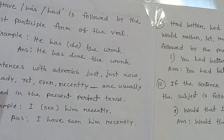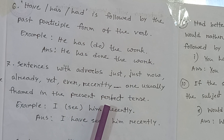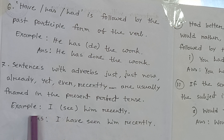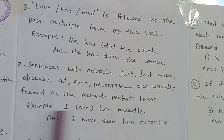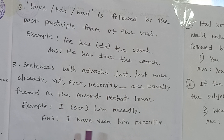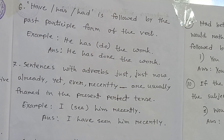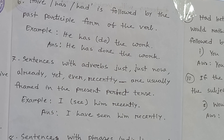Rule number seven: sentences with adverbs just, just now, already, yet, ever, recently are usually framed in the present perfect tense. For example, 'I (see) him recently' — you write 'I have seen him recently.' Sentences with adverbs just, already, yet, ever, recently are framed in the present perfect tense.